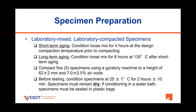Specimen preparation procedure for lab mix, lab compacted specimens. For short-term aging, loose mixture shall be conditioned for four hours at the design compaction temperature prior to compacting. Once the short-term aging is done, compact five specimens to the air void and specimen size requirements. Once specimens are made and cooled down, place specimens in an environmental chamber or water bath at 25 ±1°C for two hours ±10 minutes. If specimens are to be conditioned in a water bath, they must be sealed in plastic bags to remain dry. Once conditioning is done, testing can start.